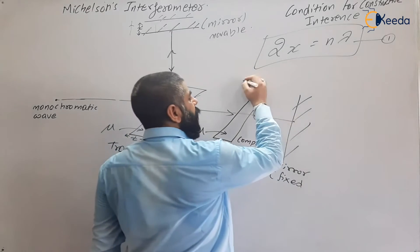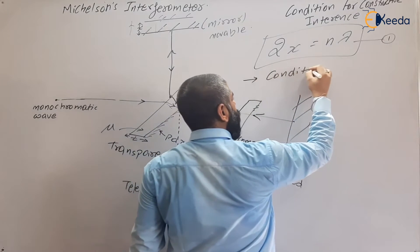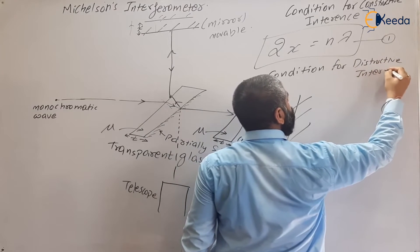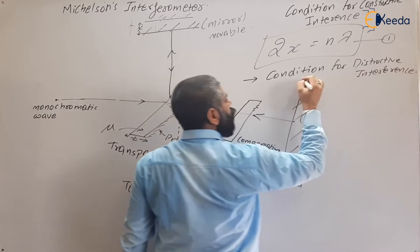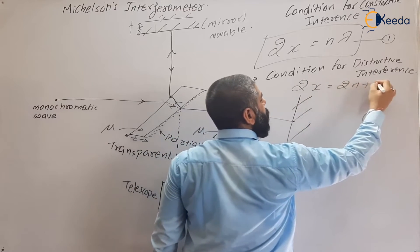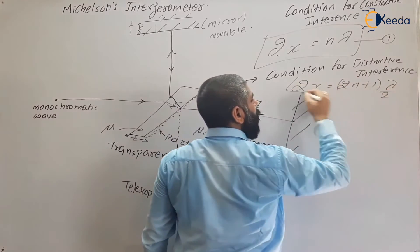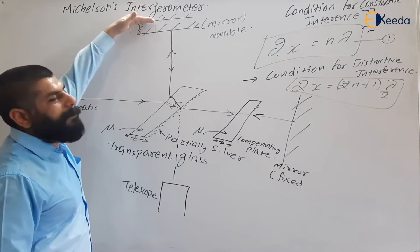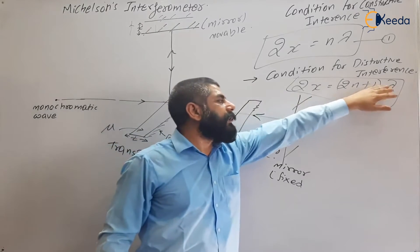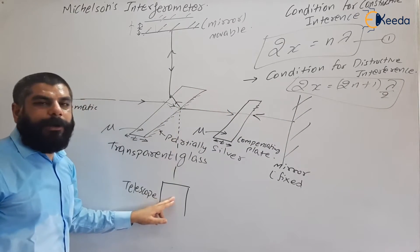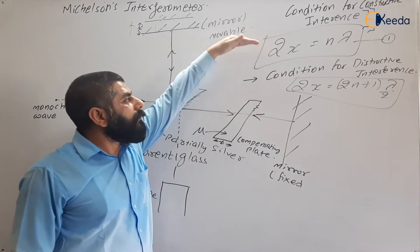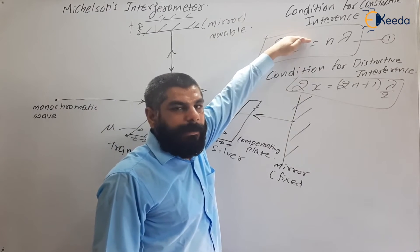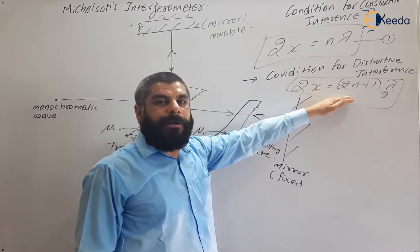The condition for destructive interference is that the path difference equals (2n+1)·λ/2, so: 2x = (2n+1)·λ/2. When this condition is met, a dark fringe is observed on the telescope. Constructive interference gives bright fringes and this condition gives dark fringes.